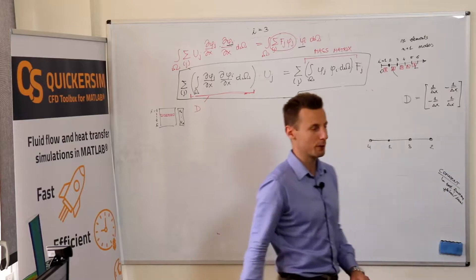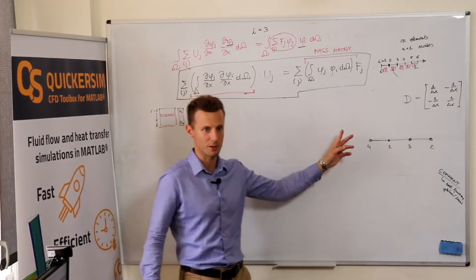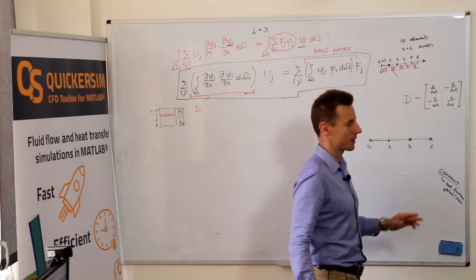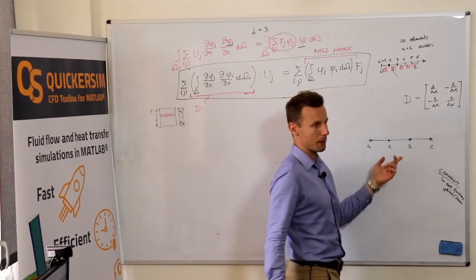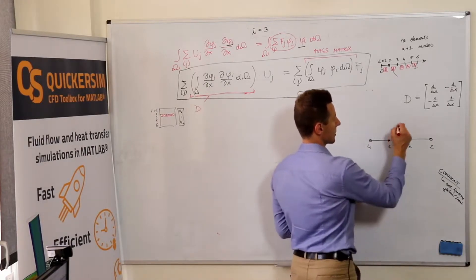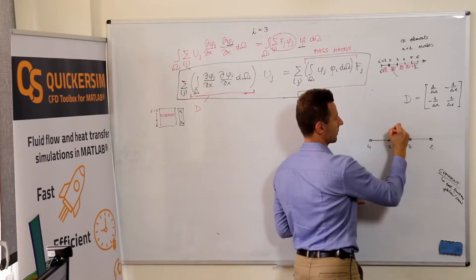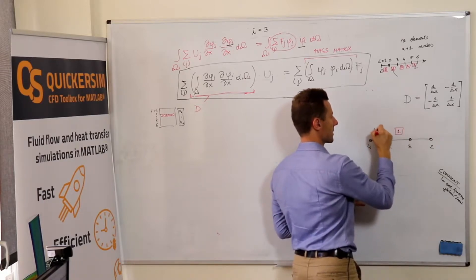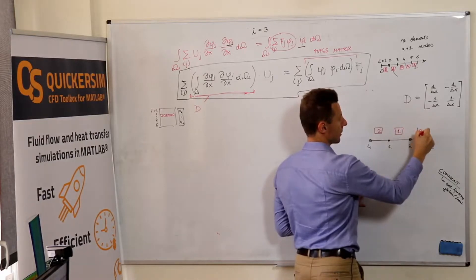It's a very simple example yet fully general, so it nicely shows how to assemble the finite element matrices on unstructured meshes. Let's assume it's the first element, this one is the second, that one is the third.